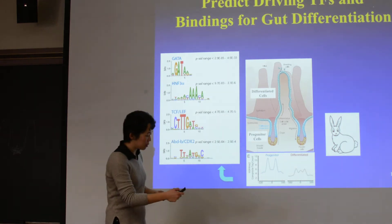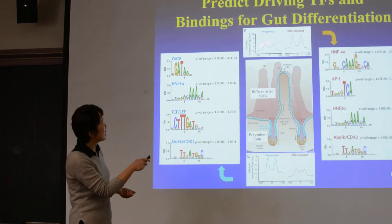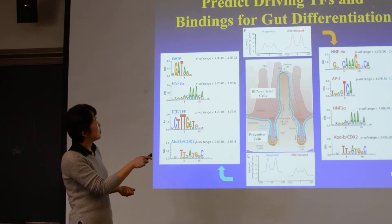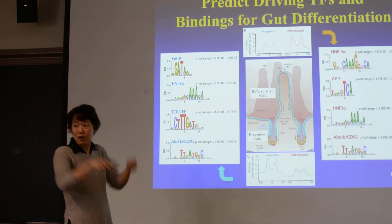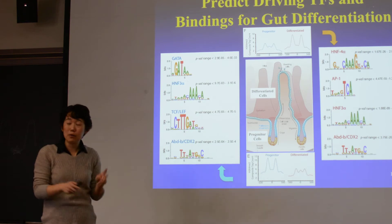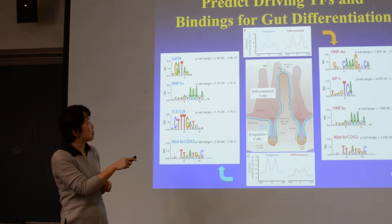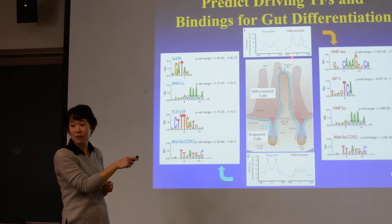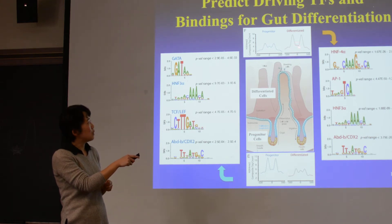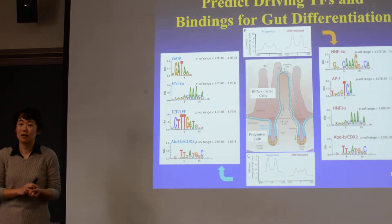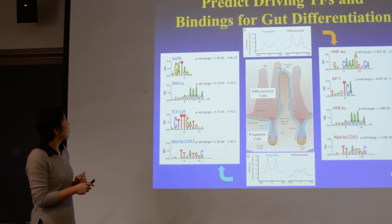There are also cases where in the progenitor cells you have a weak signal, but in the differentiated cells you suddenly see a strong one. That would be a transcription factor that gets activated in differentiation. If we do motif analysis, you will also see a whole bunch of transcription factor motifs in there.